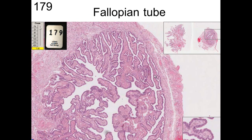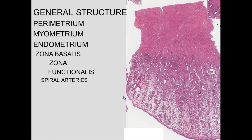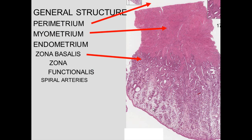As you get closer to the uterus, there's more muscle, but you still have ciliated cells. When you get to the uterus, this is the myometrium and the endometrium. The endometrium has a basal layer and a functional layer — this is the layer that changes with the different cycle. The basal layer has spiraling arteries that project up into the functional layer whenever nourishment is needed.